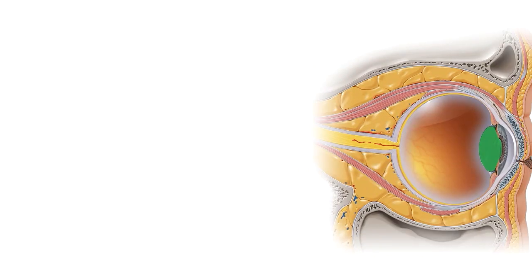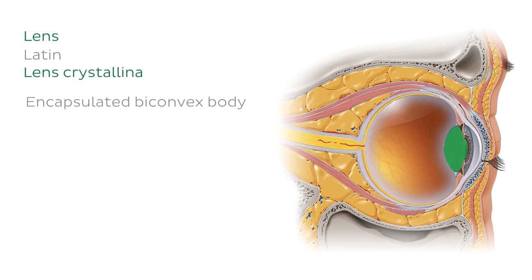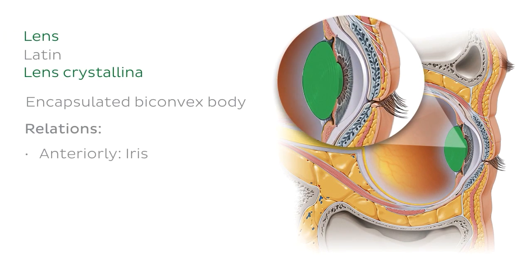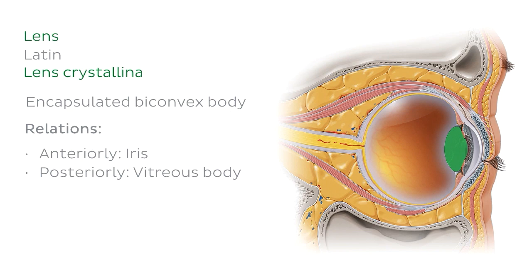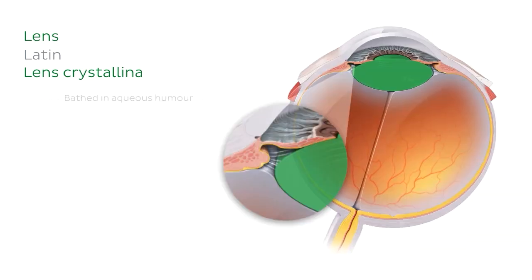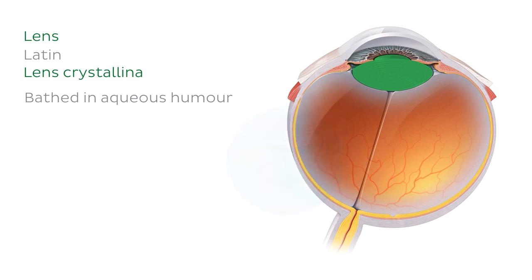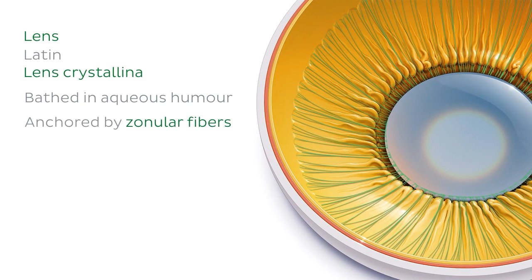The lens is an encapsulated biconvex body located anterior to the iris and posterior to the vitreous humour of the vitreous body. The vitreous body is the clear gel that fills the main cavity of the eye between the lens and the retina, depicted and highlighted in green in this illustration. The lens is bathed in aqueous humour and is encircled and anchored to the ciliary processes by zonular fibres issued from the ciliary body.